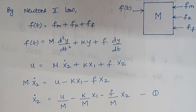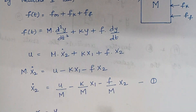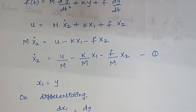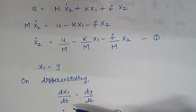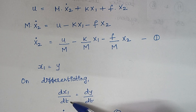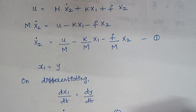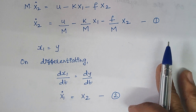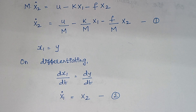We know x1 = y. Now differentiating: dx1/dt = dy/dt. dx1/dt is nothing but x1 dot, and dy/dt is nothing but x2. So x1 dot = x2. Finally, we have framed our expressions for state variables x1 dot and x2 dot, and these are the respective state equations.